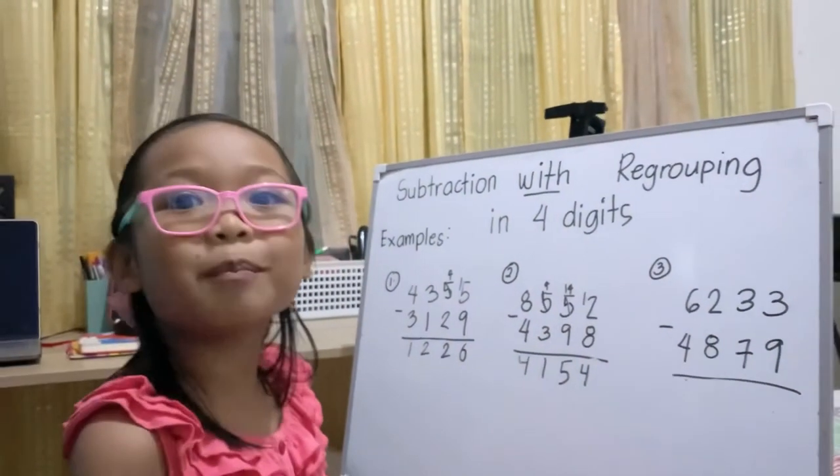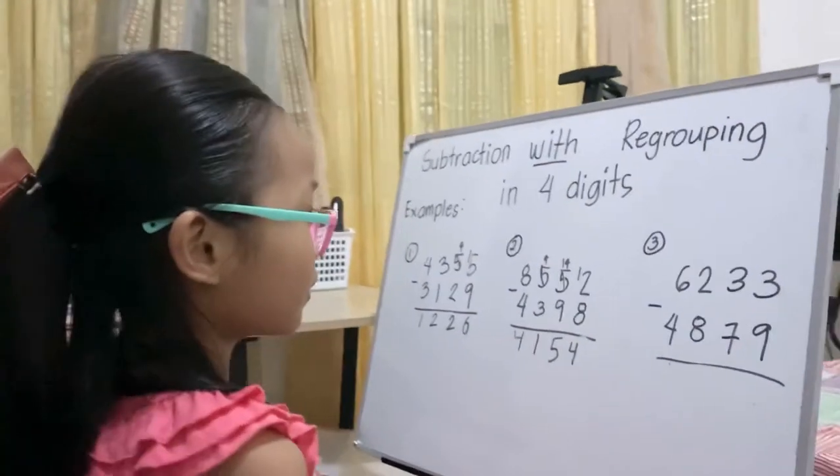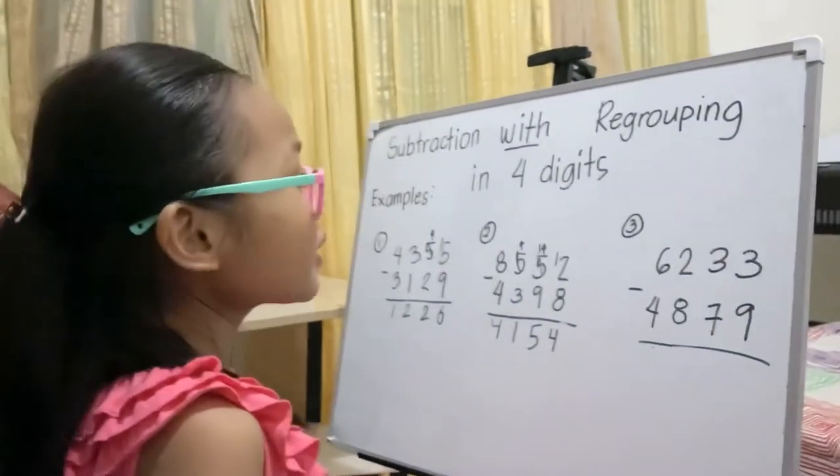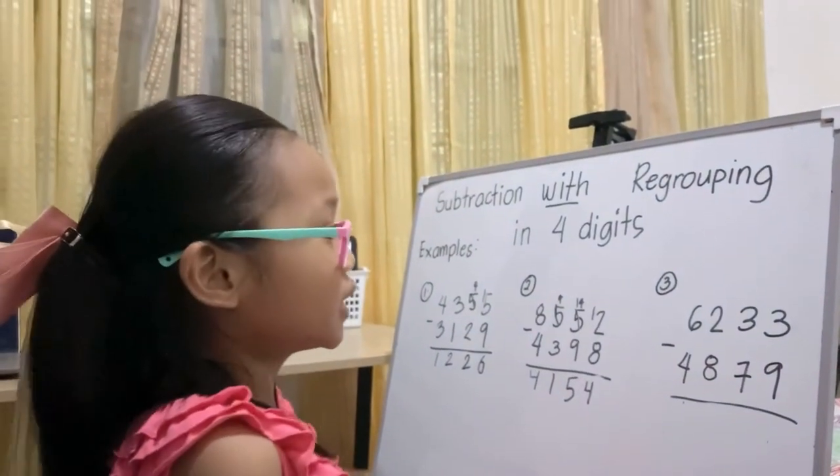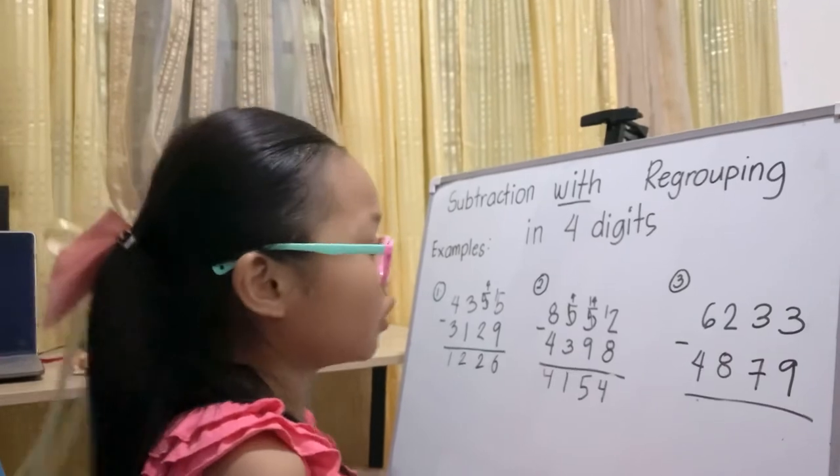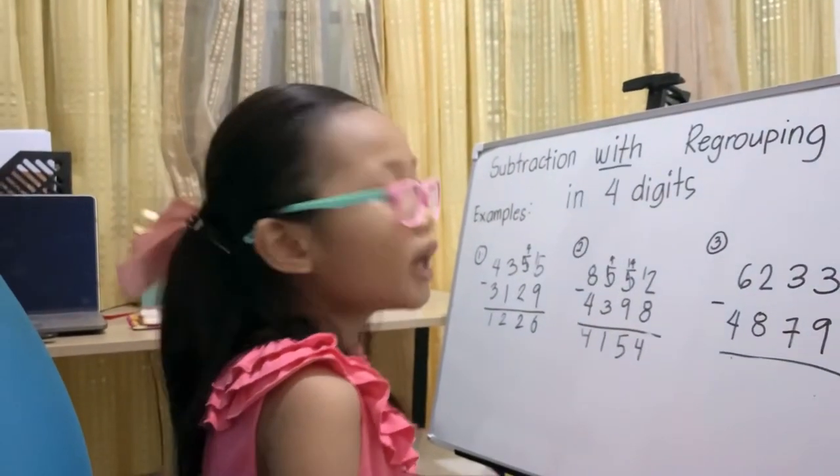Example number three: 6,233 minus 4,879.